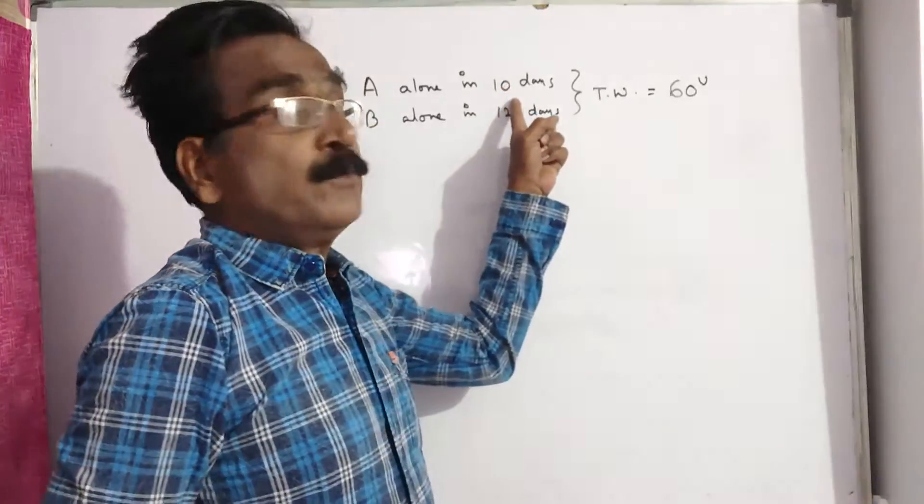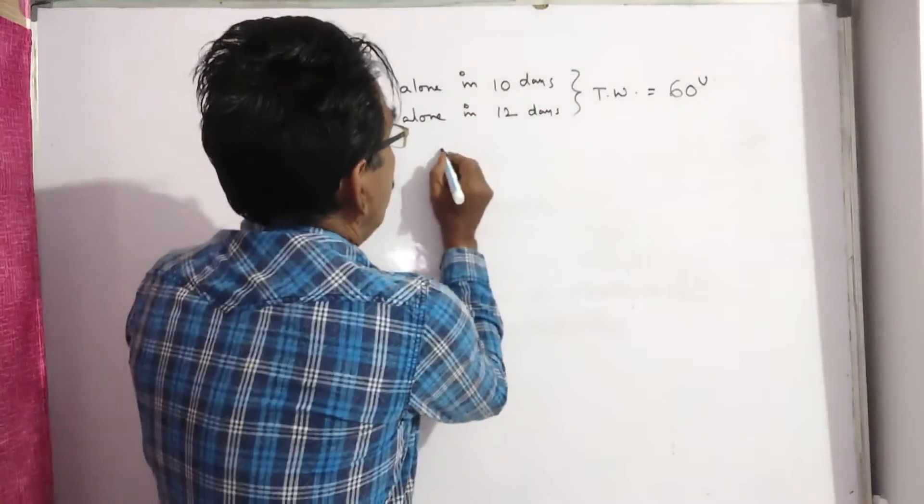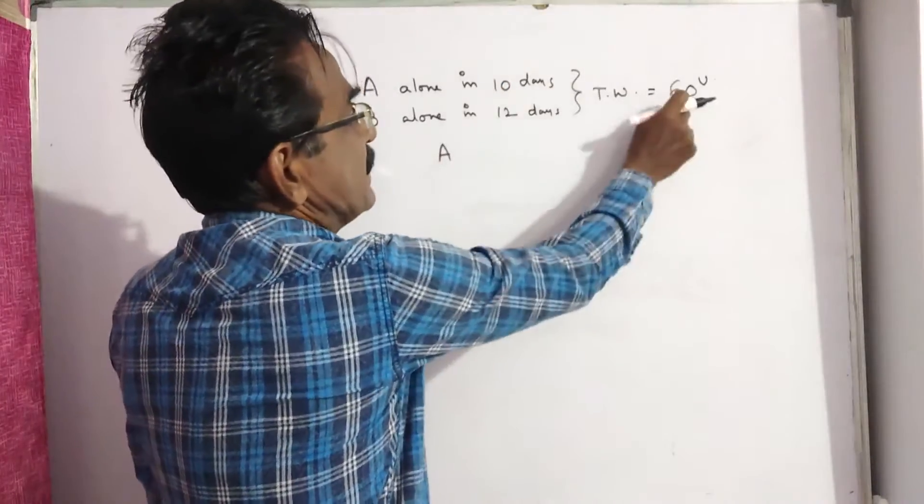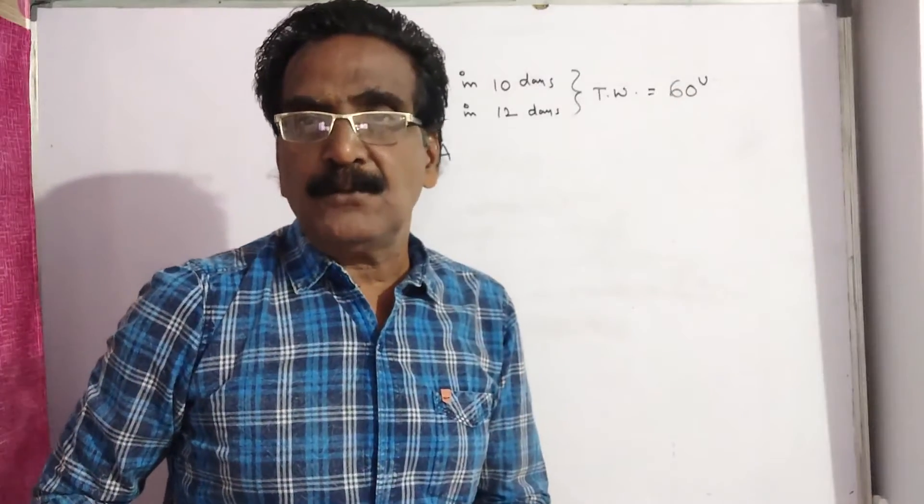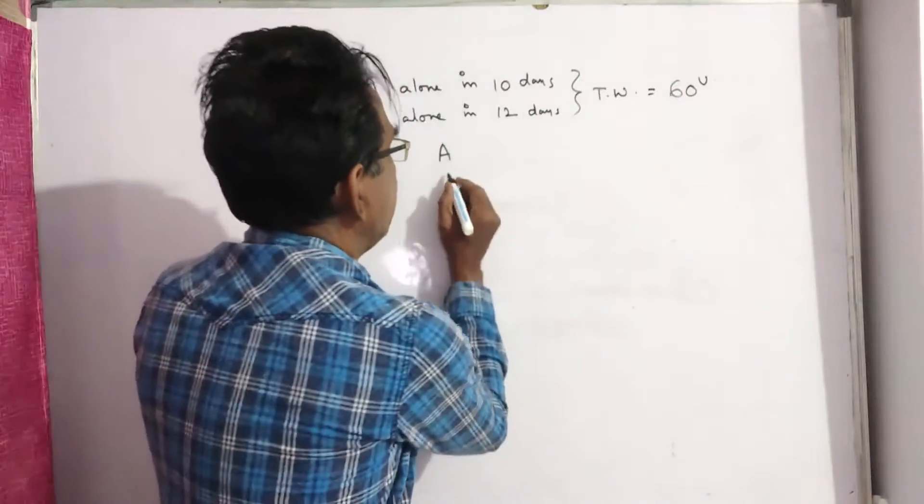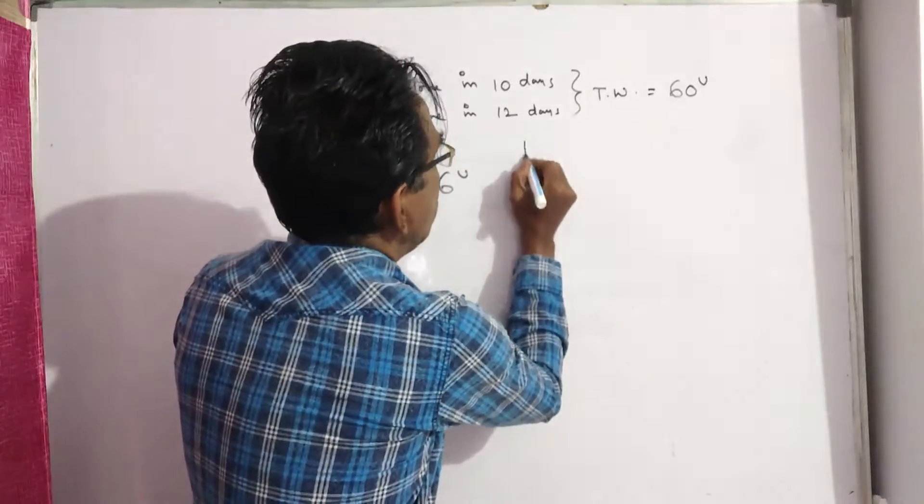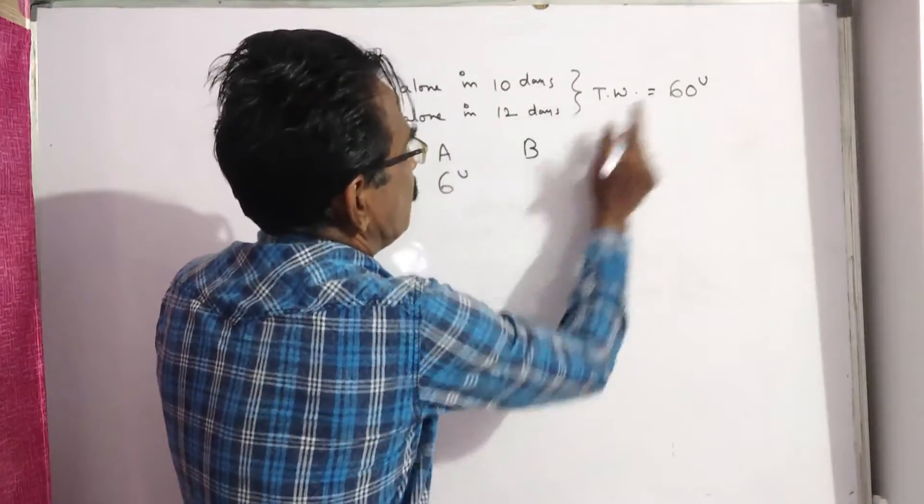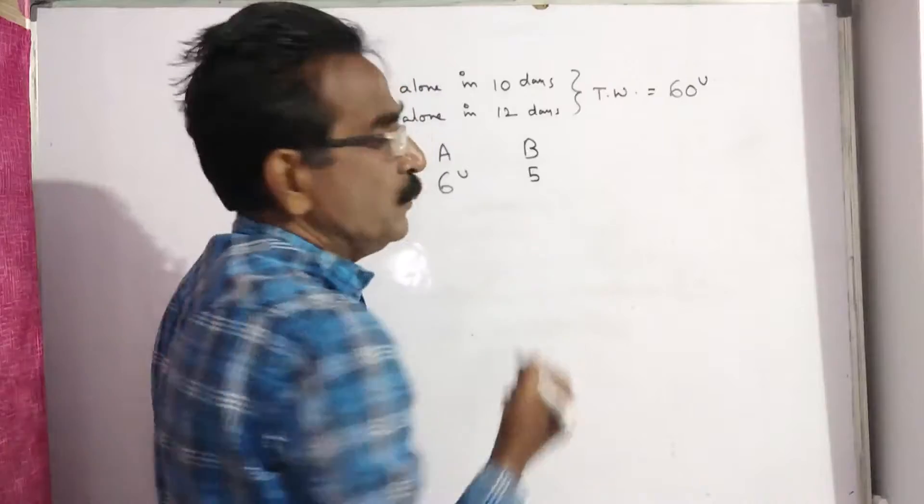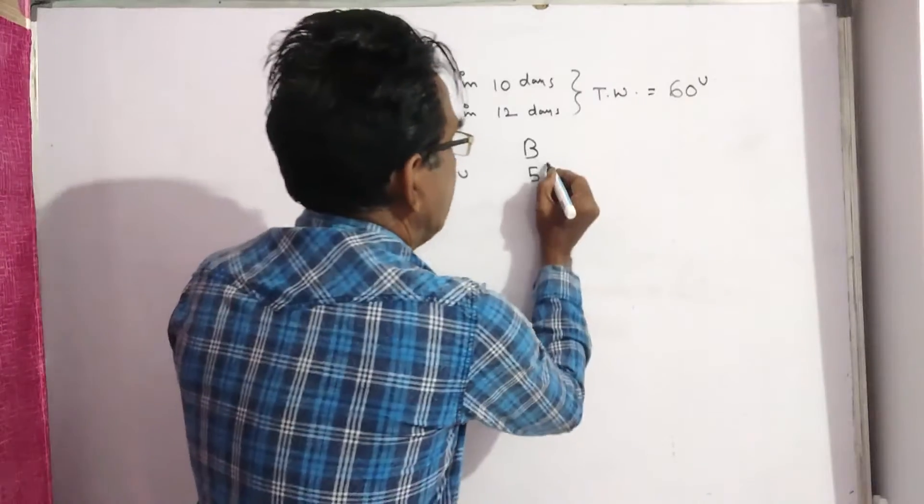Then A can do 6 units of work per day (10 days, 6s, 60), whereas B can do 5 units of work per day (12 days, 5s, 60).